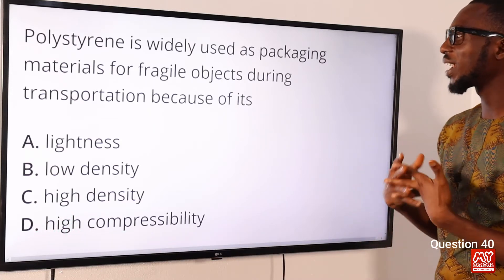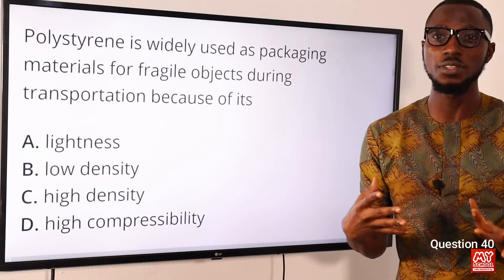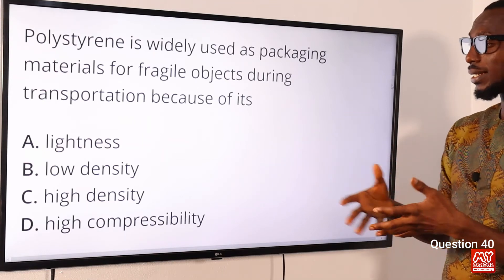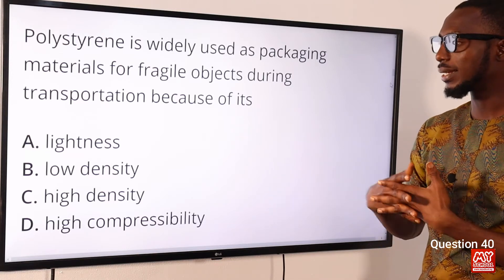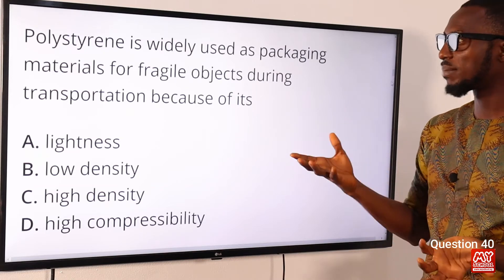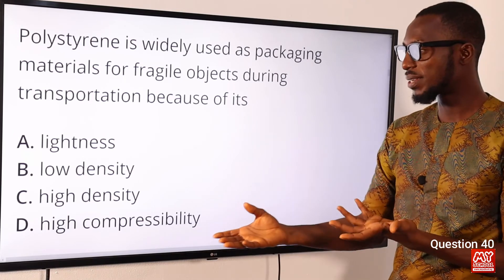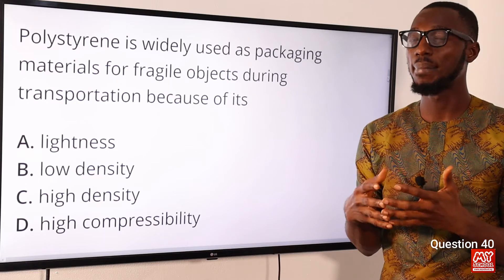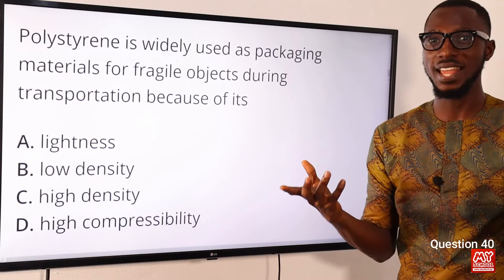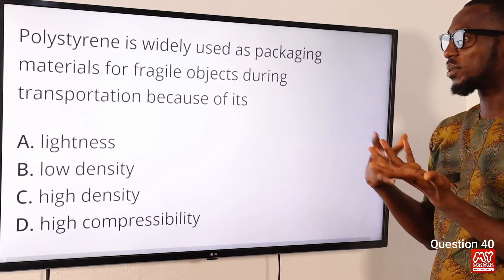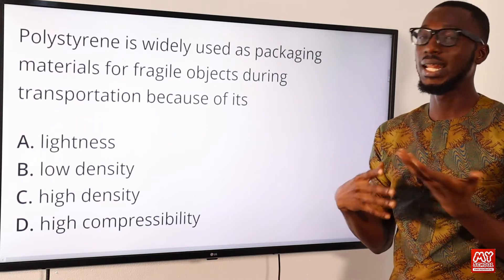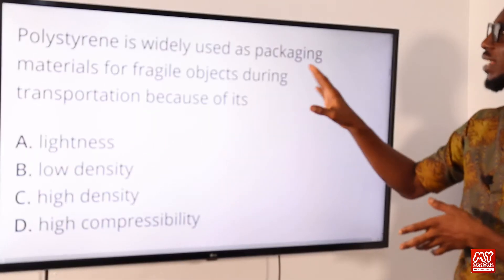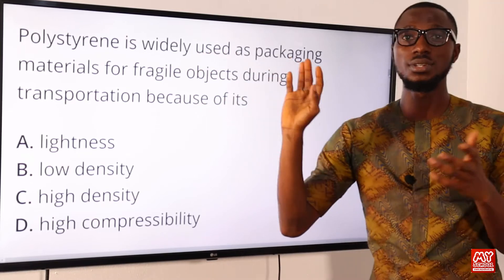Question 40: Polystyrene is widely used as packaging material for fragile objects during transportation because of its what? This is because of its high compressibility — a key property when packing and transporting fragile objects. Polystyrene is also a clear transparent material and is used for disposable cups and electrical insulation fixtures. The correct option is option D, due to its high compressibility.